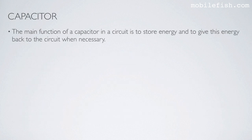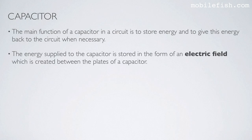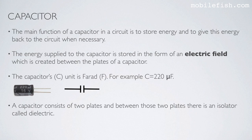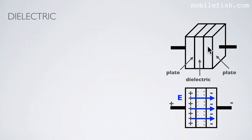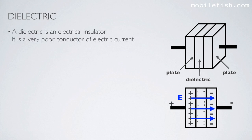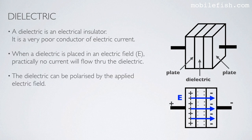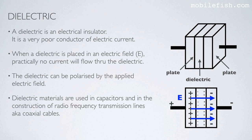The main function of a capacitor in a circuit is to store energy and to give this energy back to the circuit when necessary. The energy is stored in the form of an electric field created between the plates of a capacitor. The capacitor's unit is farad, for example 220 microfarad. A capacitor consists of two plates with an isolator called a dielectric between them. A dielectric is an electrical insulator — a very poor conductor of electric current. Dielectric materials are used in capacitors and in the construction of radiofrequency transmission lines, also known as coaxial cables.